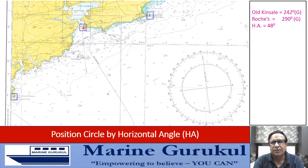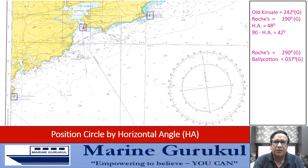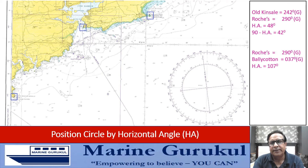For the first pair — Old Head of Kinsale and Roches Point — the horizontal angle is 48°, and 90 minus 48 gives 42°. For the second pair — Roches Point and Bellycotton Island — the horizontal angle is 107°, which is more than 90°, and 90 minus 107 gives minus 17°.